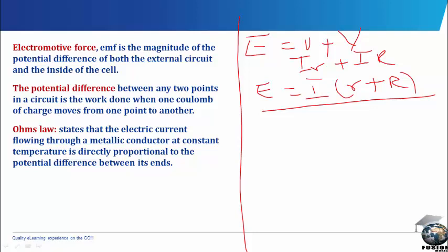The potential difference between any two points in a circuit is the work done when one coulomb of charge moves from one point to another within the field.